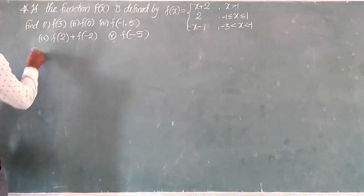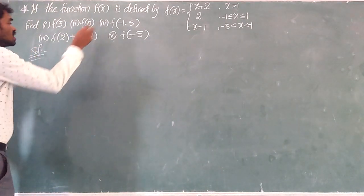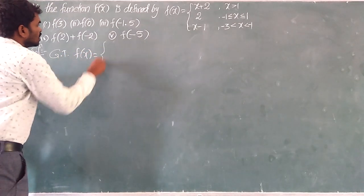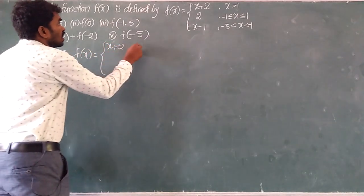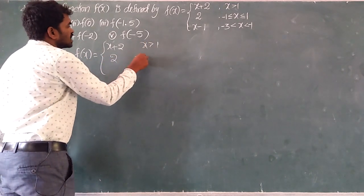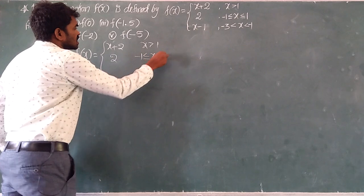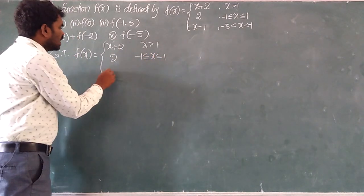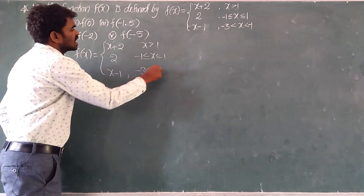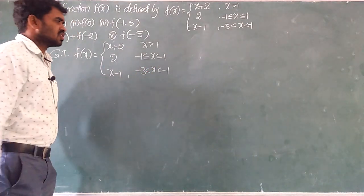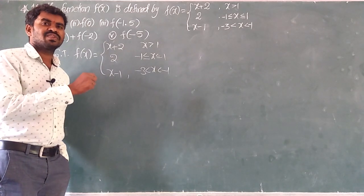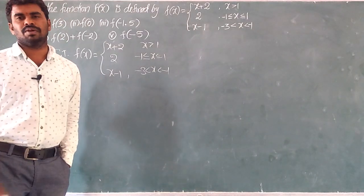Solution. First of all, the function f of x is given: x plus 2 when x is greater than 1, and 2 when minus 1 is less than or equal to x less than or equal to 1, and x minus 1 when minus 3 is less than x less than minus 1. Very simple question, once if you listen, we can very simply solve this problem.